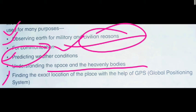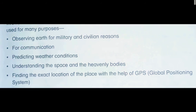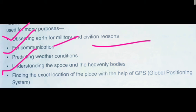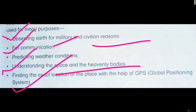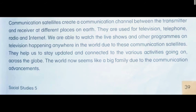We also use satellites for understanding space and heavenly bodies. And the next use: finding the exact location and place with the help of GPS. GPS helps us find addresses and locations. So to summarize: we use satellites for observing Earth for military and civilian reasons, for communication, for weather prediction, for understanding space and heavenly bodies, and for finding exact locations. That is why satellites have been launched into orbit in the universe.